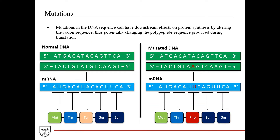Mutations that occur in the DNA sequence have downstream effects. We have normal double-stranded DNA, then you transcribe an mRNA. This sequence is transcribed into the mRNA sequence, and each of those codons is then translated into the polypeptide sequence. So an effect here can be brought into the mRNA and eventually affect the polypeptide sequence.